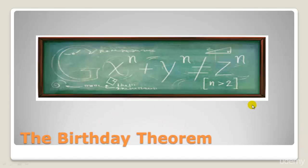So it is exactly what it looks like: G raised to n plus y raised to n is unequal to z raised to n, where n is greater than 2. The birthday theorem was previously known as capture-recapture statistics, which was invented in the 1930s to count fish — yeah, seriously, fish.